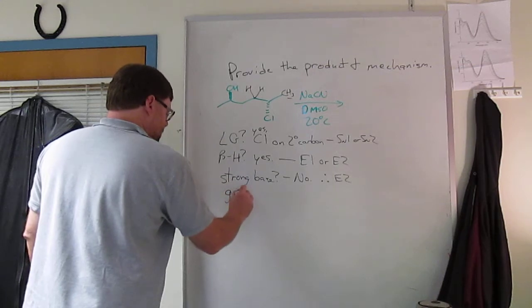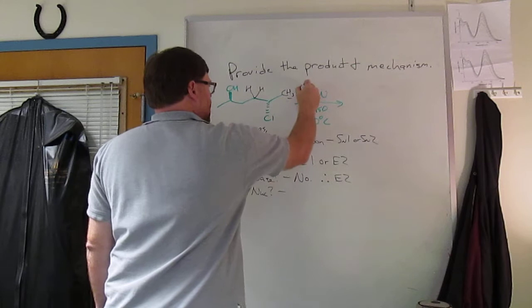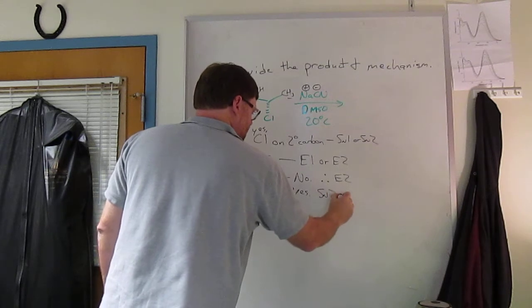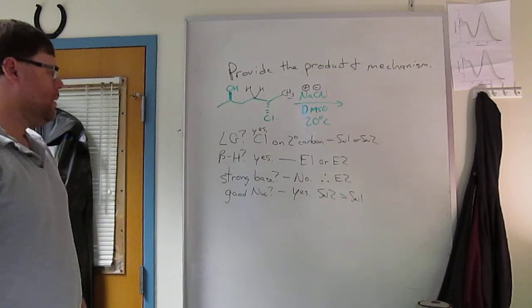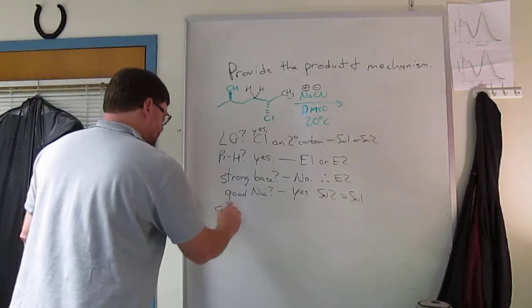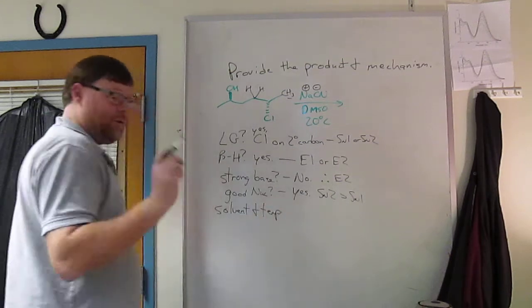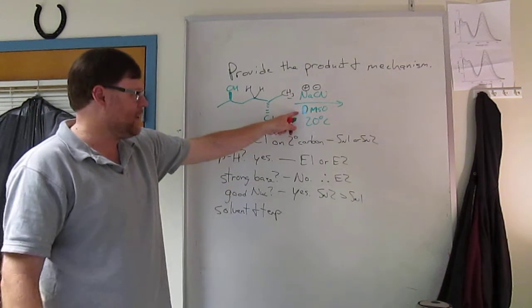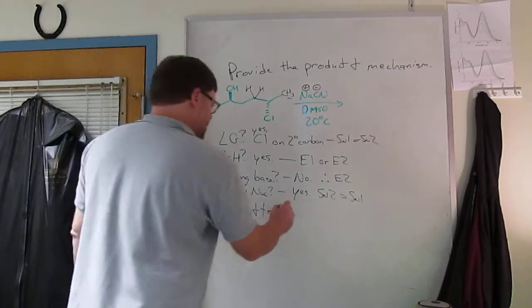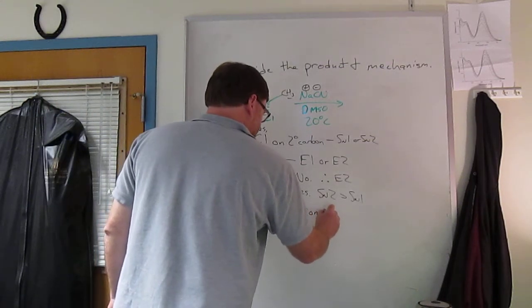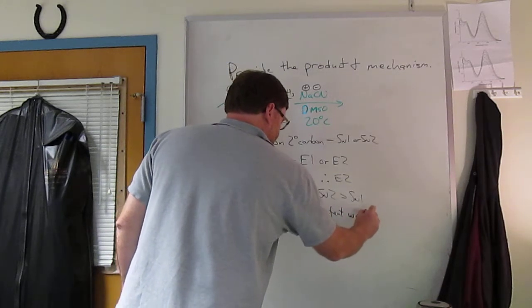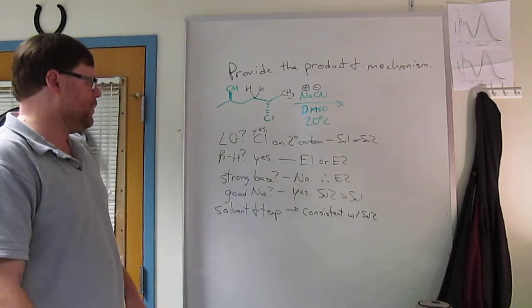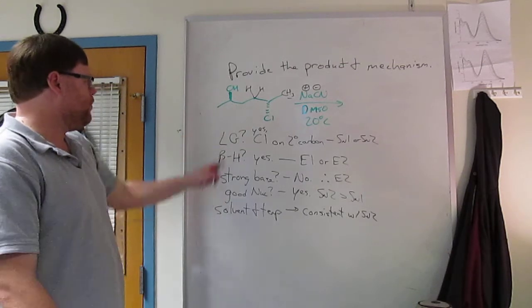Do you have a good nucleophile? And you do. Cyanide, remember sodium plus, cyanide minus. So SN2 will be faster than SN1, most likely. What about solvent and temperature? Again, solvent and temperature don't use these to tell you what the mechanism is, but they should support the mechanism. And the solvent in this case is polar aprotic, that supports SN2. Temperatures lower, that supports substitution. So this is consistent with SN2. And that's really where you end up, right? Good nucleophile, that'll do SN2. Solvent temperature support SN2. Secondary carbon can do SN2. So everything kind of points to SN2.